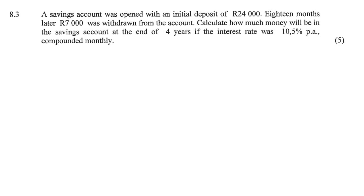A savings account was opened with an initial deposit of 24,000 rand. So this is definitely a five-mark question. We're going to use a timeline. 18 months later, 7,000 rand is withdrawn. Calculate how much money will be in the savings account if the interest rate is 10.5% per annum compounded monthly.